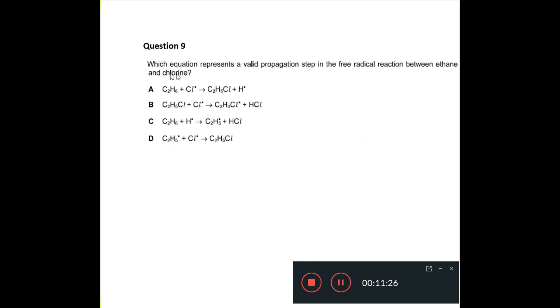Question nine says, which equation represents a valid propagation step in the free radical reaction between ethane and chlorine? This is a very good question, and it catches students out, because what they'll tend to do is to write this, but it's very important to remember that you don't form the chloroalkane in the first step of the propagation steps. Actually, what you form is the alkyl radical, so your answer is not A.